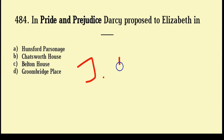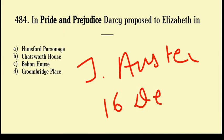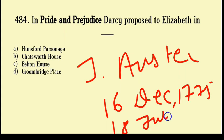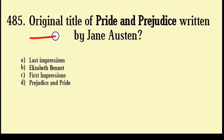Jane Austen was born 16th December 1775 and died 18th July 1817. She was an English novelist.